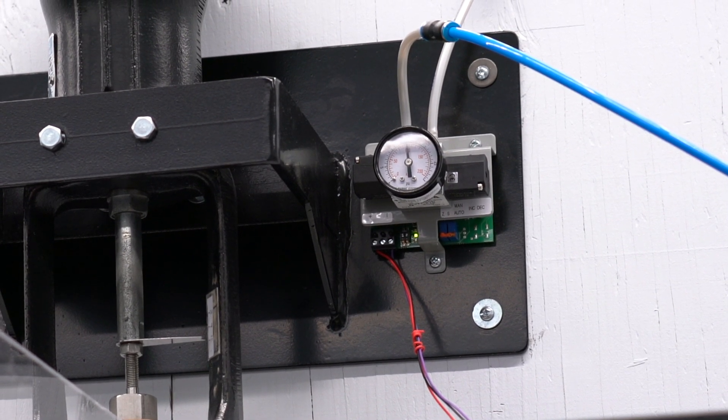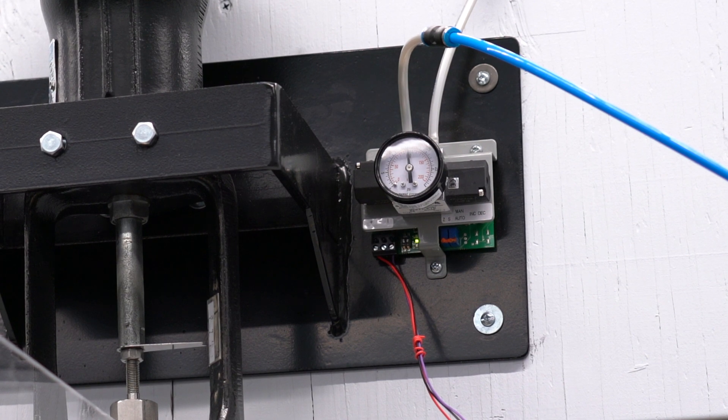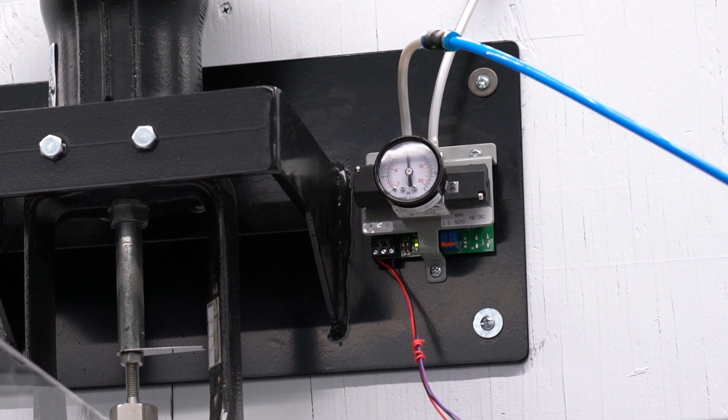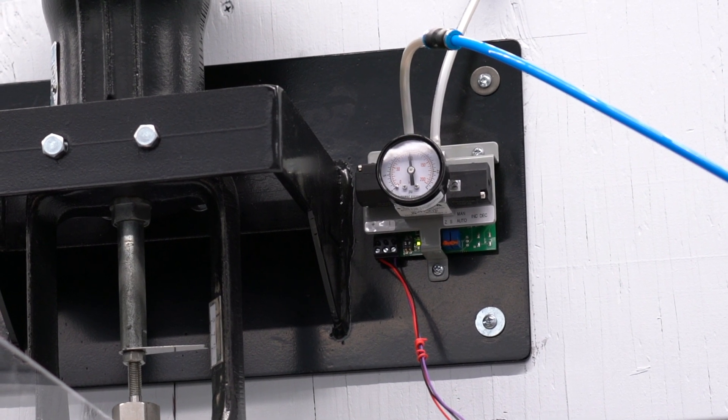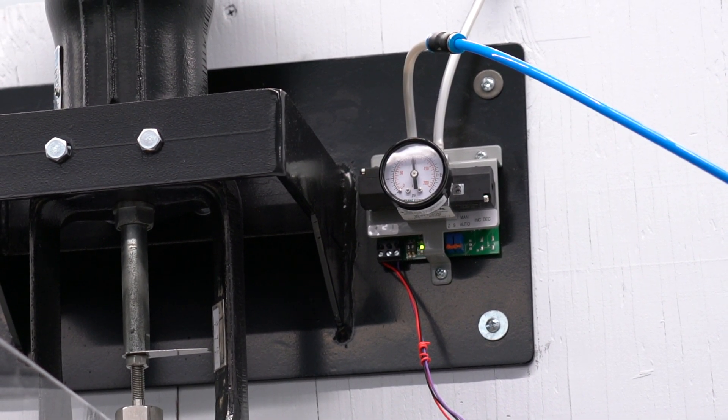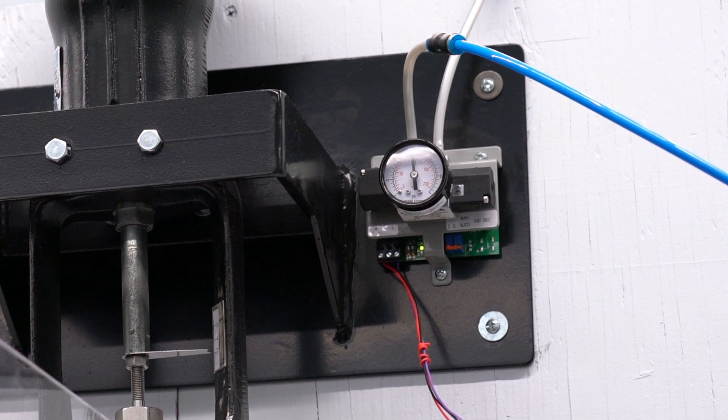The reason it's not 0 psi is that a lot of pneumatic systems always start at 3, because that way we can detect if there's a leak in the system. It'll go to 0 psi and not be at 3. So it's 3 to 15. Right now the gauge is showing me 15 psi.